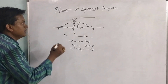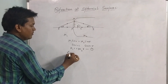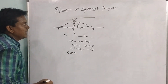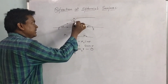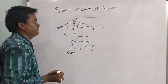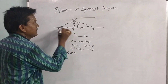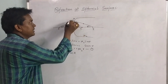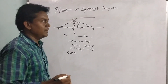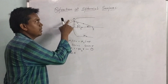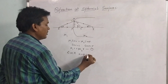Now observe triangle OCA. In this triangle, alpha and beta are interior angles, and i is the exterior angle. From the exterior angle theorem, the exterior angle equals the sum of the two interior angles. Therefore, alpha + beta = i.